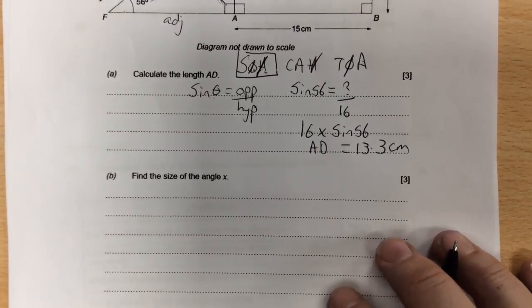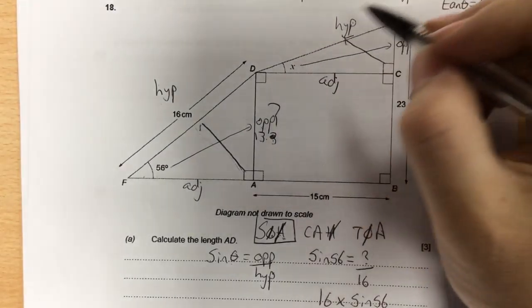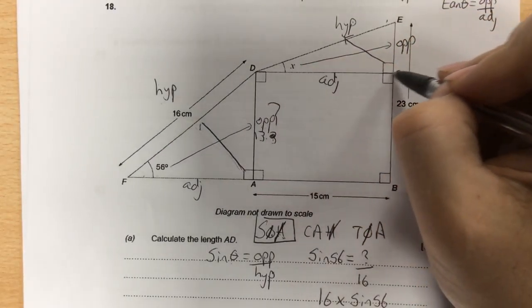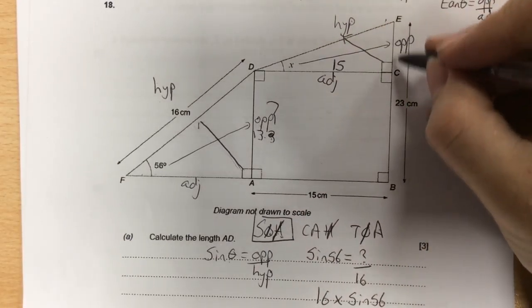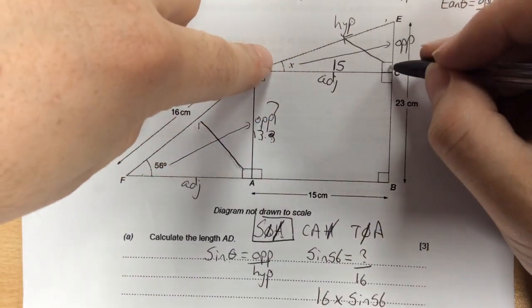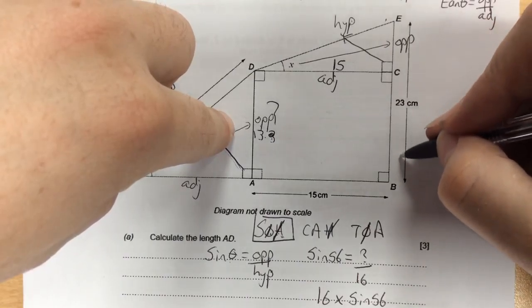Find the size of angle X. Angle X is up in this triangle here. We don't know the hypotenuse. We know the adjacent is 15 because it's the same as the bottom. We need to know the opposite now, because to find the angle, we need to know two of the sides.